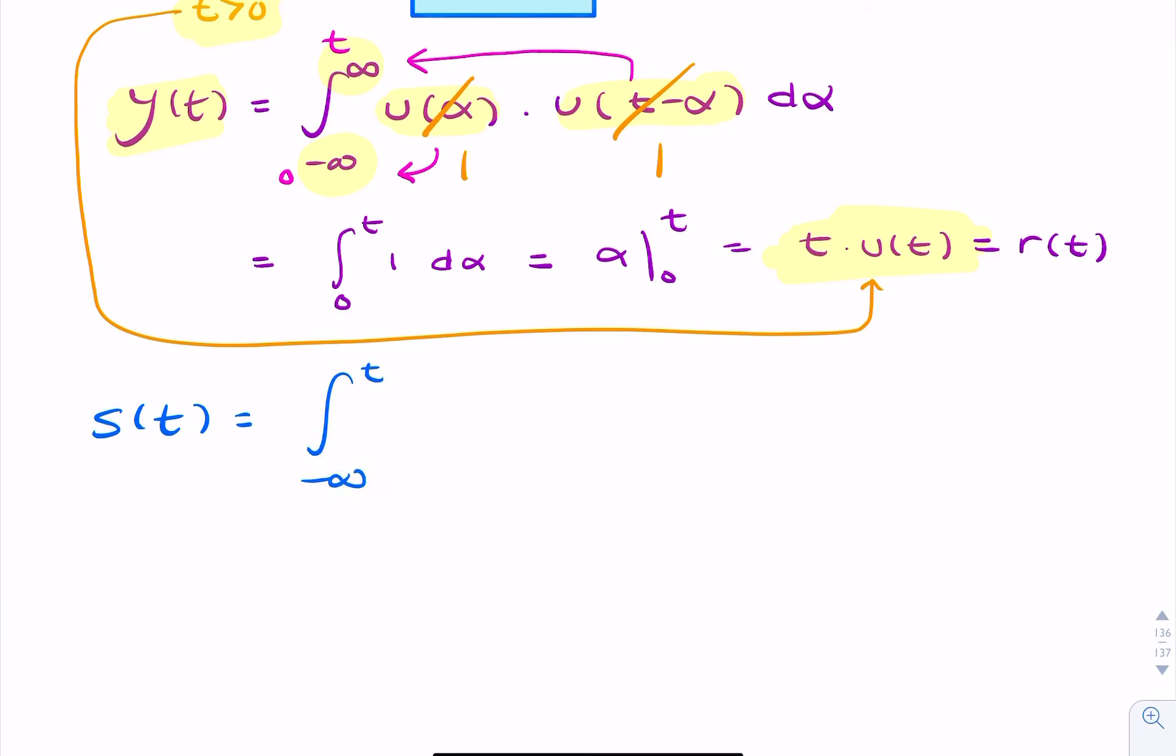So we can say the step response is the integral. Now, watch out. When you integrate, you don't integrate until infinity. You only integrate until the same point in time that you're looking for here. So you only integrate until T. So what we're integrating is the impulse response, H of alpha. And that's the integral for minus infinity to T of U of alpha, d alpha.